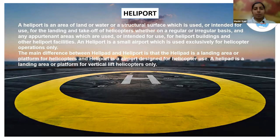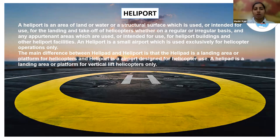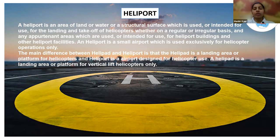That was all about airports. Now let's learn a few more things about the heliport. A heliport is an area of land, water, or a structural surface used or intended to be used for the landing and takeoff of helicopters, whether on a regular or irregular basis, and includes buildings and other heliport facilities. A heliport is a small airport used exclusively for helicopter operations. Helicopters require only vertical takeoff and landing and don't need a long runway for a ground run.